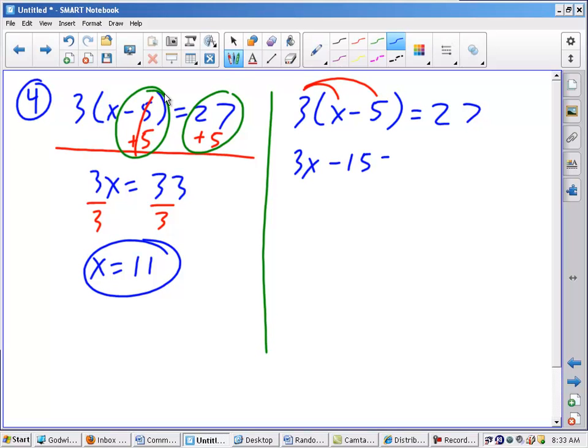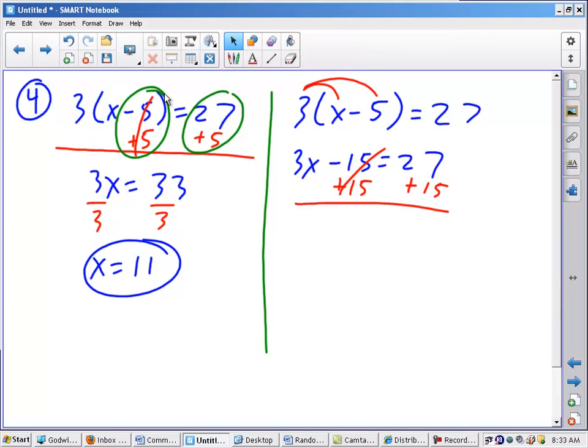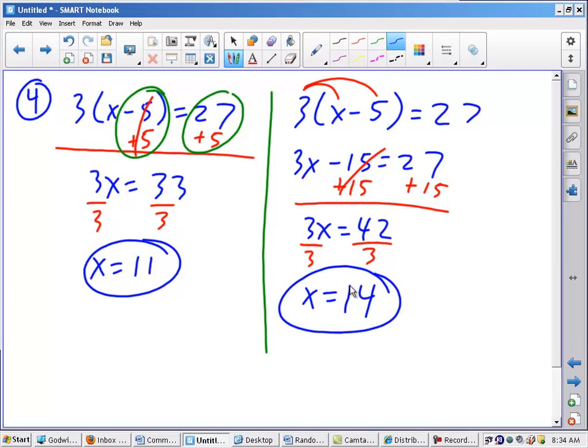3 times x, 3x. 3 times negative 5, negative 15 equals 27. Now you can go about doing your two-step equation, which again should be automatic, which is 3x equals 27 plus 15 will then give me 42. And then if I divide 3 into 42, I get 14.